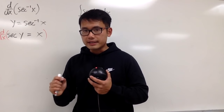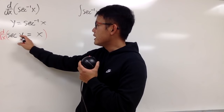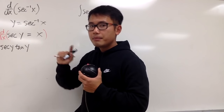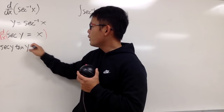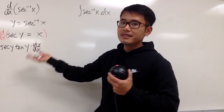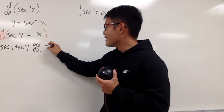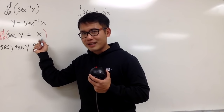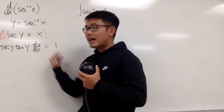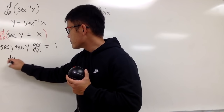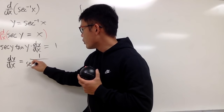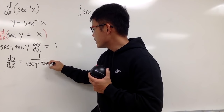Keep in mind, y is a function of x. The derivative of secant y is going to be secant y tangent y. But because y is a function of x, we will have to multiply by dy/dx — this is the implicit differentiation by the chain rule. The derivative of x with respect to x is just equal to 1.